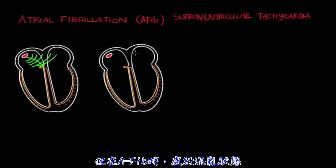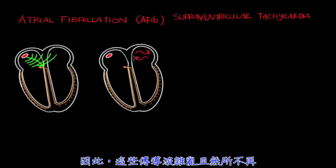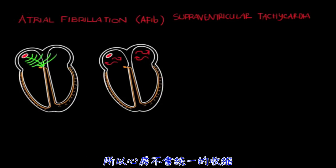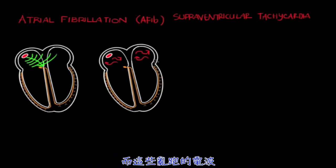However, in AFib, the wavelets are in disarray — notice how they're all erratic and going everywhere. Because you lose this organized signal, you're not going to have the unified contraction of the atria.